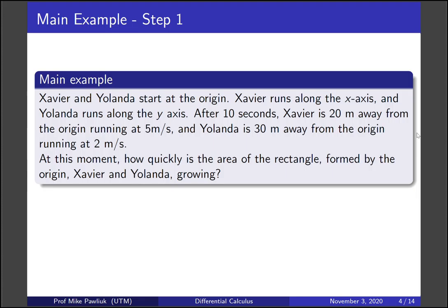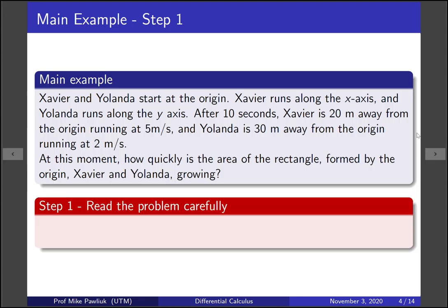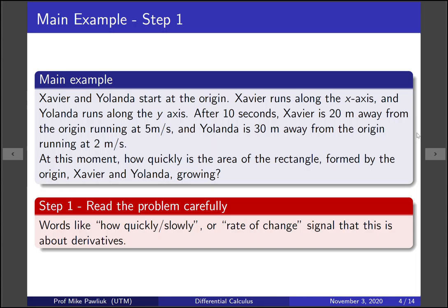This brings us to our first step of solving a related rates problem, which is read the problem carefully. One thing that we can look for are words like 'how quickly' or 'how slowly,' or 'rate of change,' which will signal to us that this is a question about derivatives. Take a moment right now to read through the problem again.